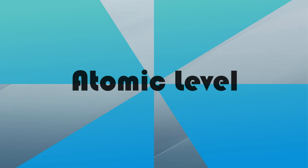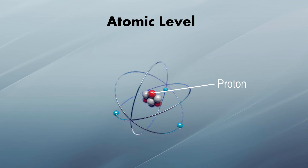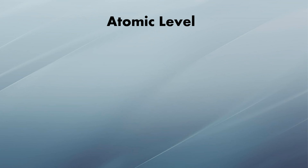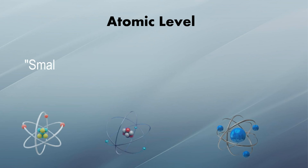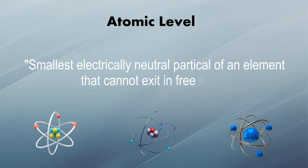At the atomic level, these sub-particles combine in a particular way: protons and neutrons lie in a central position, giving rise to a dense central nucleus with a positive charge, while negatively charged electrons revolve around the nucleus, forming an atom. An atom can be defined as the smallest electrically neutral particle of an element that cannot exist in a free state.